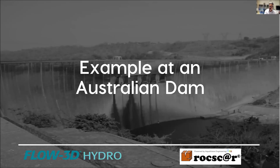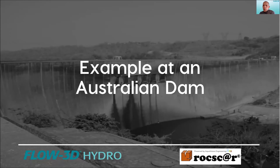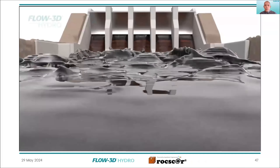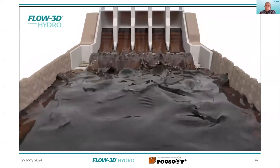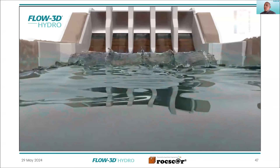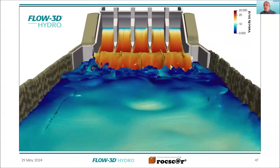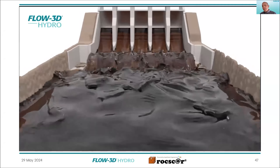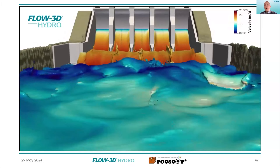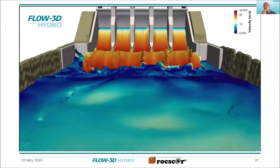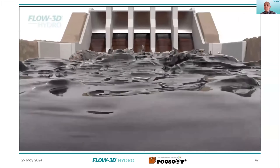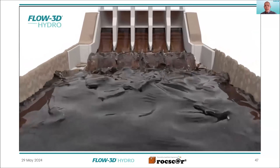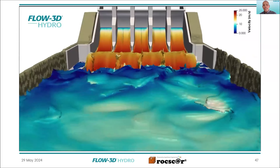Eric will now continue with an example of this coupling in three dimensions on an Australian dam. So now we've talked about how this works — let's actually try it at a real site. We're looking at this gated spillway. We wanted to do a Flow3D webinar this year with the Australian Water School. I've heard Eric talk about this coupling approach, but I'd never actually tried it myself. So we arranged a date to do this webinar before I had actually used the coupling. The pressure was on. I had some basic training from Eric, and this is my first coupling project.